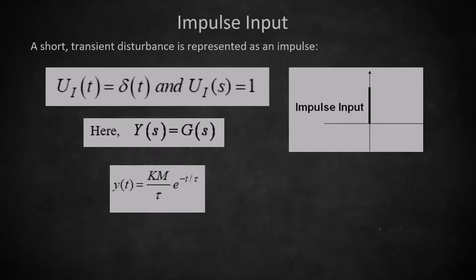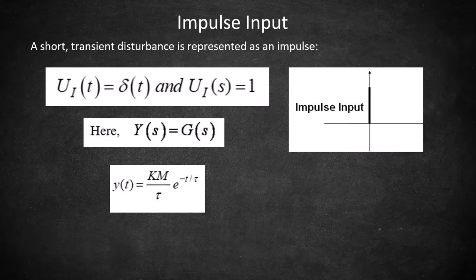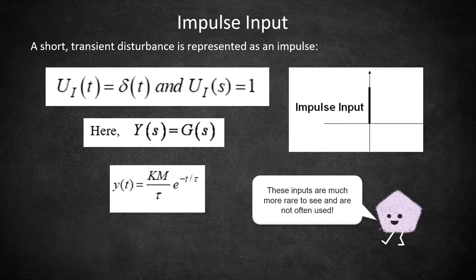The last input is impulse input. Impulse inputs are very rare in practice and aren't often used, so I won't go into too much detail about it, but if you do have an impulse input, then you can model the output response using the function on the bottom left.